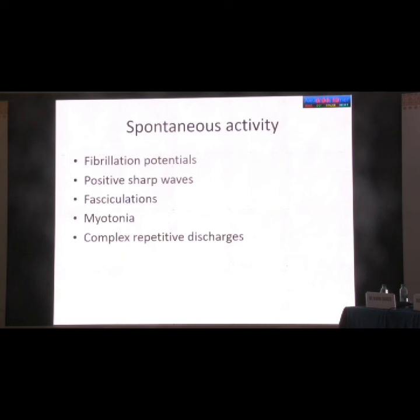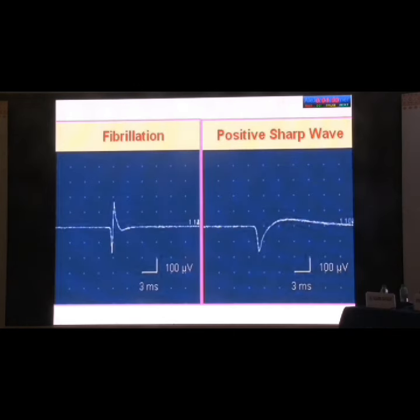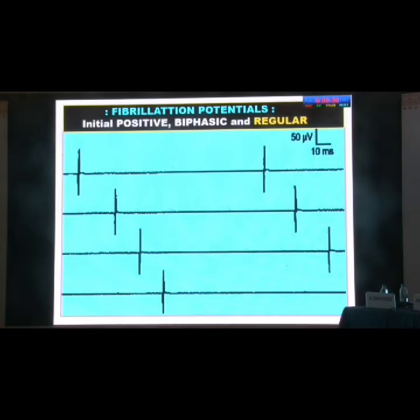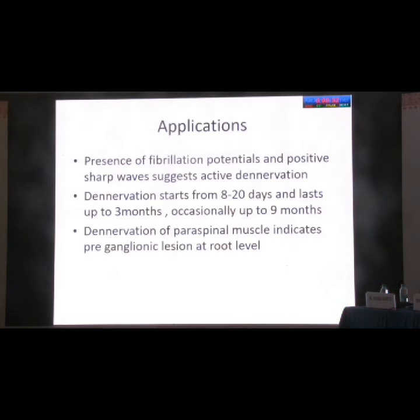Fasciculations, myotonia, and complex repetitive discharges are usually seen in anterior horn cell disorders or muscle disorders. For nerve injury, fibrillation potentials and positive sharp waves are most important. A fibrillation has an initial positive deflection, and the positive sharp wave has a different configuration, but both signify the same thing — active denervation in the muscle.